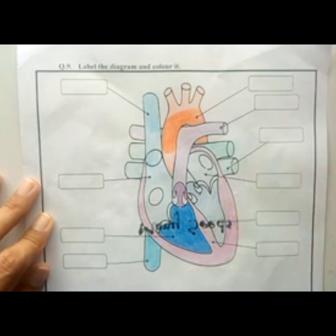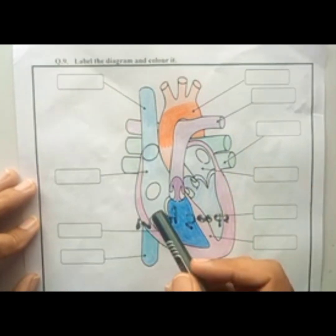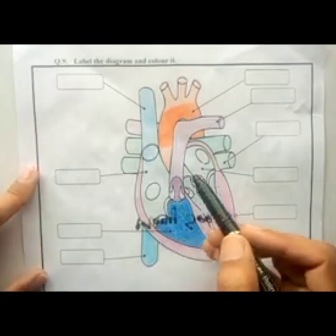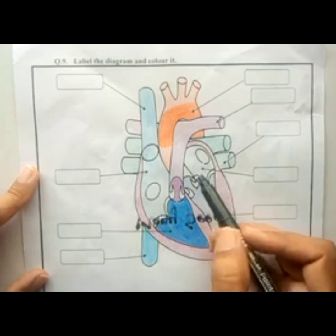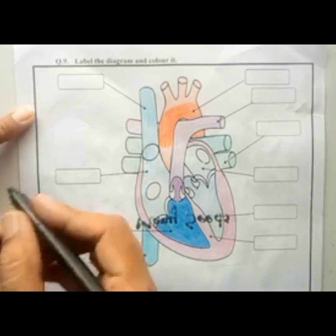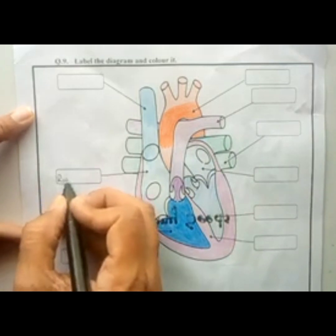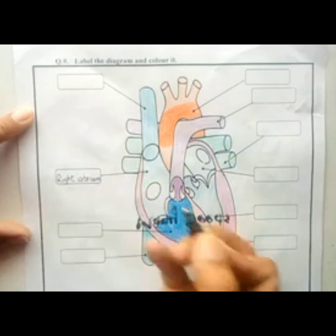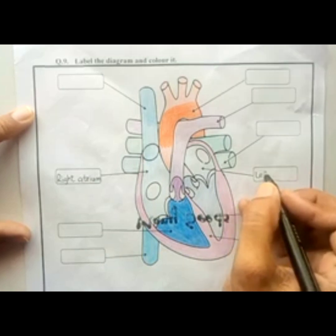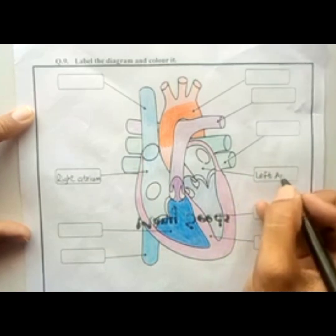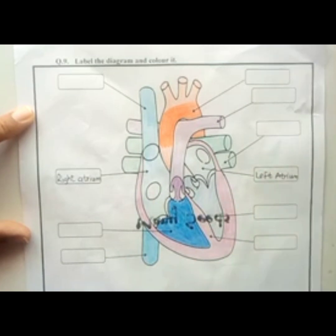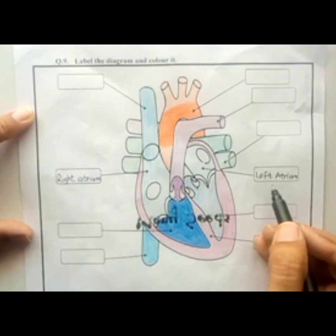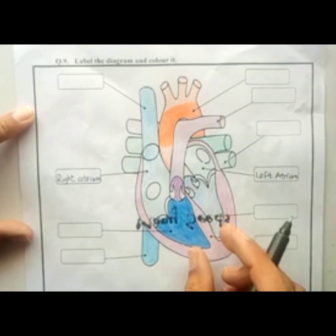The heart consists of four chambers. The upper two thin-walled chambers are known as the right atrium and the left atrium. Right atrium contains deoxygenated blood and the left atrium contains oxygenated blood.